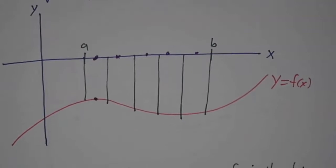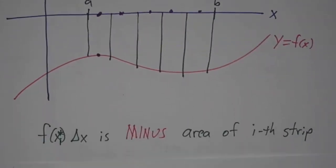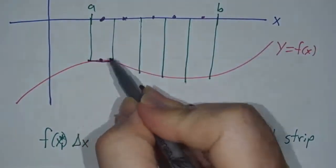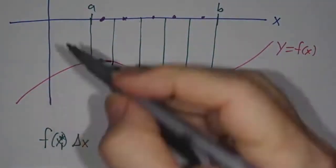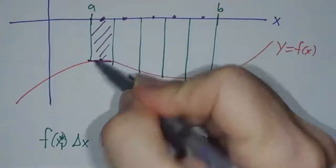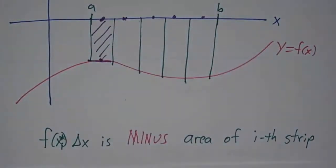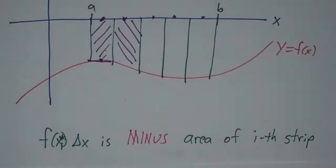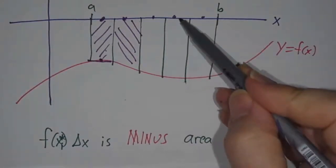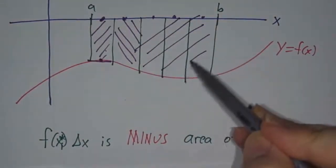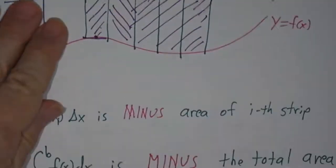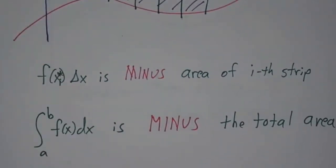But the point is that in this case, if you take f of x times delta x, that isn't the area of this rectangle, it's minus the area of the rectangle. So if you add up your pieces, you get minus the area of the first rectangle, minus the area of the second, minus the area of the third, minus the area of the fourth, minus the area of the fifth.